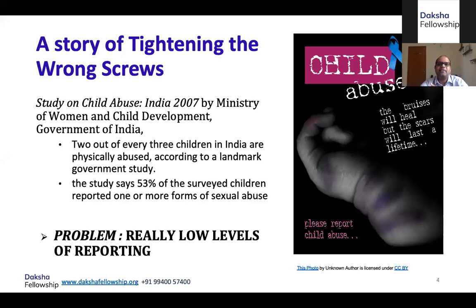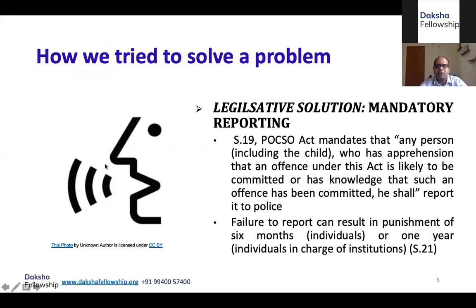So one problem was identified: what is the solution? In our country, India, we have this tendency to find a legislative solution to everything. The moment a social problem is thrown at us, our immediate response is, let us make a law that covers it. There is mob lynching — you have a fresh law. Doctors are being attacked — you have a fresh law. Anything and everything, our solution is: make a new law and create a penalty. Same way, when it came to reporting of child sexual abuse, we created Section 19 of the POCSO Act for mandatory reporting.